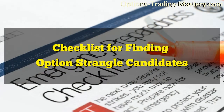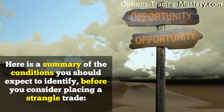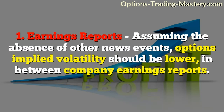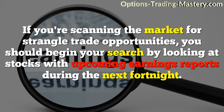Checklist for finding option strangle candidates. Here is a summary of the conditions you should expect to identify before you consider placing a strangle trade. 1. Earnings reports: assuming the absence of other news events, options implied volatility should be lower in between company earnings reports. If you're scanning the market for strangle trade opportunities, you should begin your search by looking at stocks with upcoming earnings reports during the next fortnight.